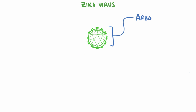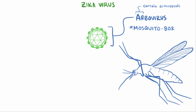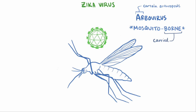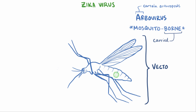Zika virus is an arbovirus, meaning it's transmitted via certain arthropods, specifically mosquitoes, so it's a mosquito-borne virus. Mosquito-borne doesn't mean that the virus is born in the mosquito though, but borne with an E, which means carried or transported. Sometimes we call organisms like this vectors, where all they do is transport the virus.